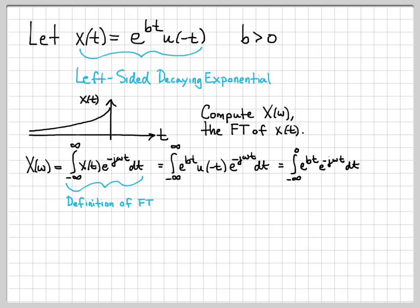Now we just have an integral from minus infinity to 0 of these two exponential functions. Using the property of exponential functions, we can write this as a single exponential function where we've added the arguments. So we now have an integral of e to the t quantity b minus j omega dt.